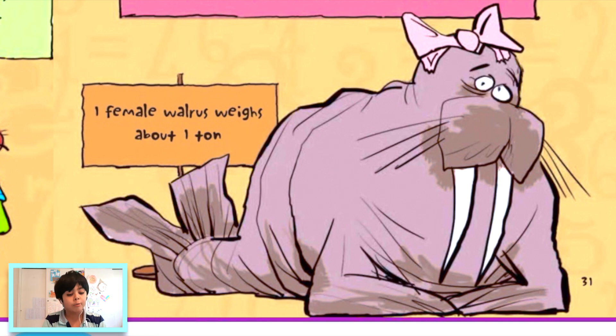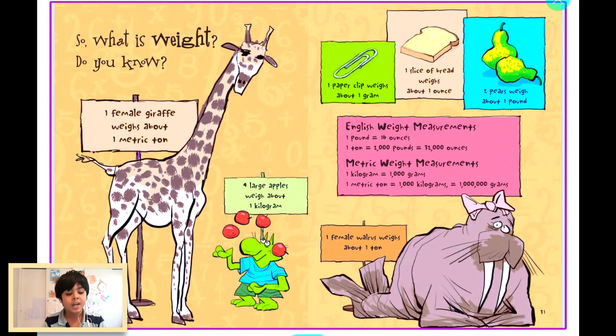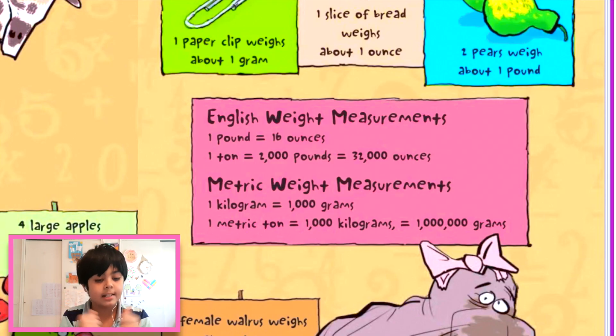So you guys see that it says English weight measurements. If you guys can't read it, let me just tell you. One pound equals 16 ounces. Remember this, guys. One ton equals 2,000 pounds equals 32,000 ounces. And another subheading: metric weight measurements. One kilogram equals 1,000 grams. One metric ton equals 1,000 kilograms equals one million grams.